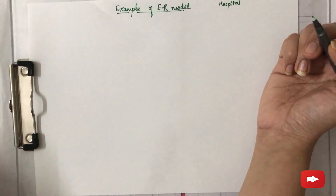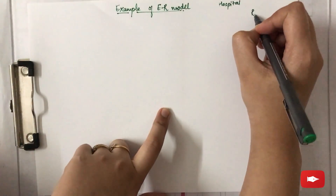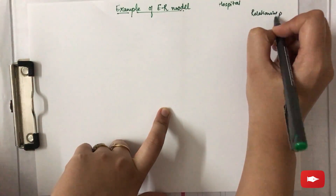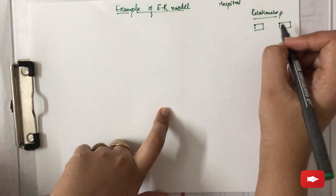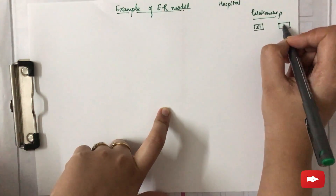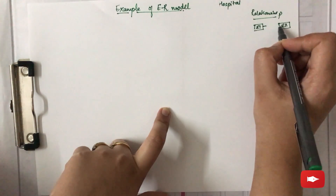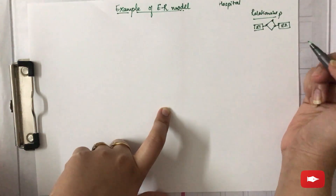Before going further with the ER diagram, you should first know a term called relationship. A relationship is basically an association among two entity sets. Entity one and entity two are connected, and the relationship can be represented by a diamond box.